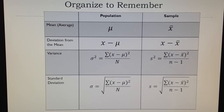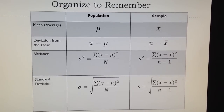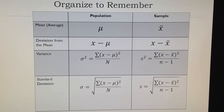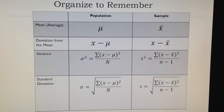First of all, organize your formulas and organize them well. This is my way of organizing formulas. I use a population column and a column for symbols of sample. The mean for population is the Greek letter mu, and the mean of the sample is the Latin letter x-bar, though we can use y-bar and others.